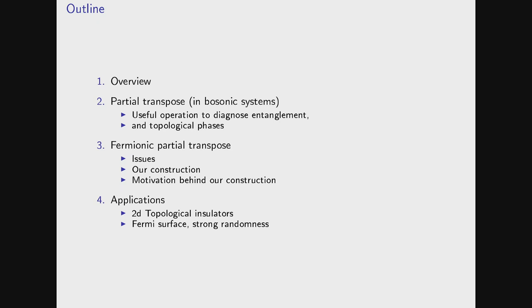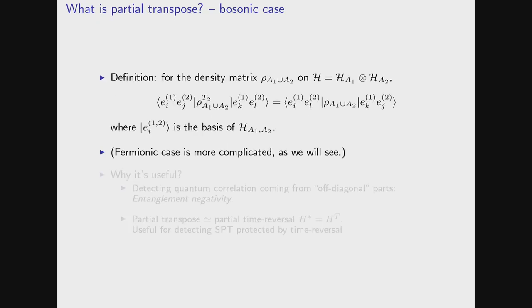I will explain the many-body invariants first for the simplest example, which is the Haldane spin chain. This is a bosonic system, whereas for fermionic systems such as topological insulators I need a bit more technique. I will first describe the basic strategy for the bosonic case, then move on to fermionic cases.